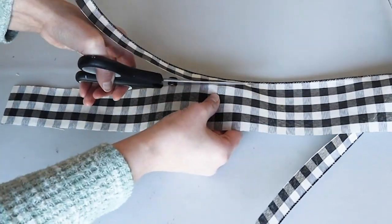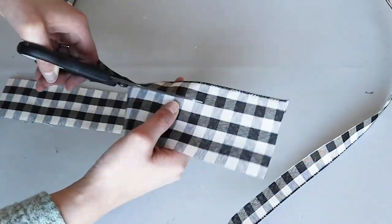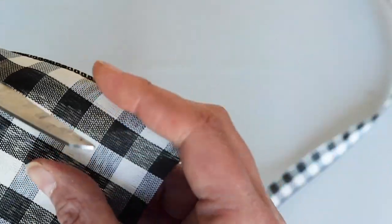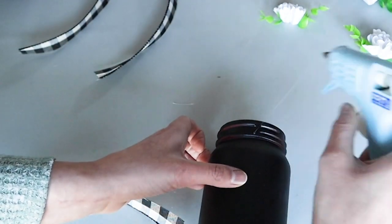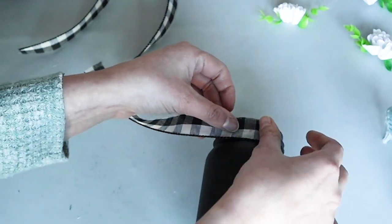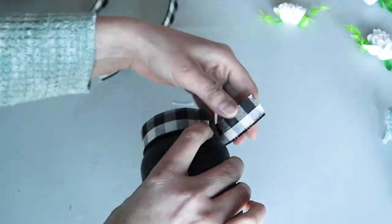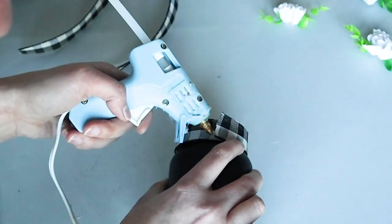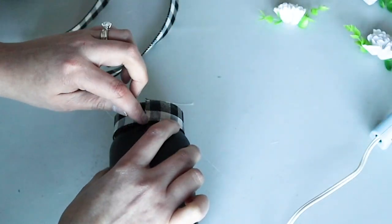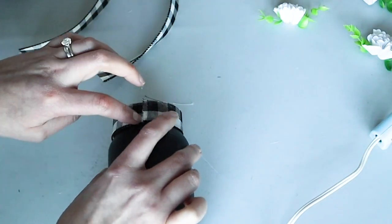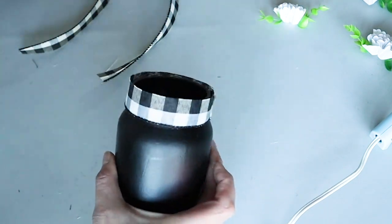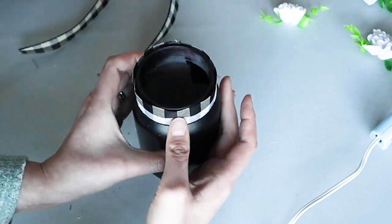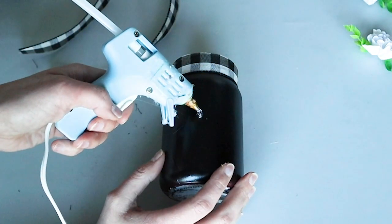I'm going to wrap the neck of the jar with some buffalo check ribbon and cut the ribbon so it will fit to the top of the jar. Then I hot glued that into place. I attached the flower and added some greenery.